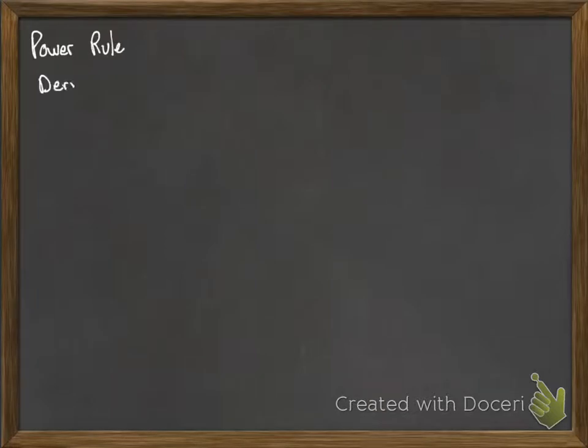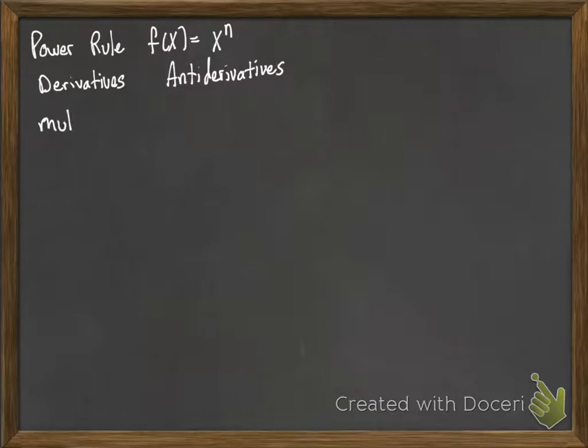Now we're ready to talk about a more general rule, and that's the power rule. First, we're going to review what it is for derivatives, and then we're also going to talk about antiderivatives. This is for f(x) equals x to the n. With derivatives, we multiply by the exponent first, and then decrease the exponent by 1. That's the process. In terms of exponents, if my function was x to the n, then the derivative would be nx to the n minus 1.